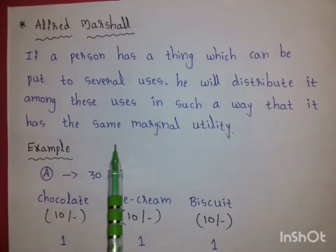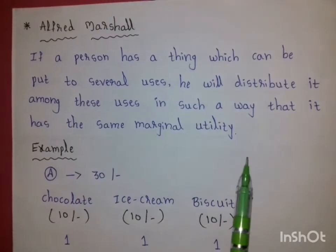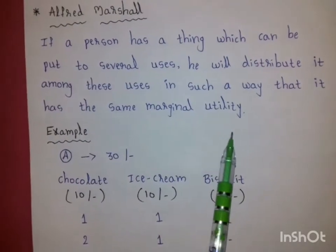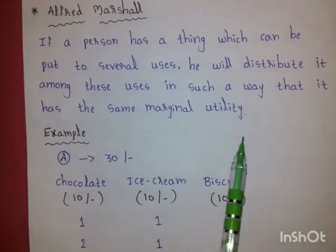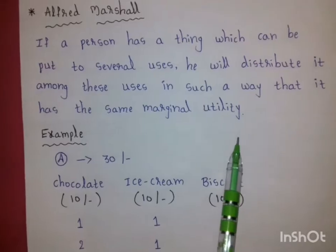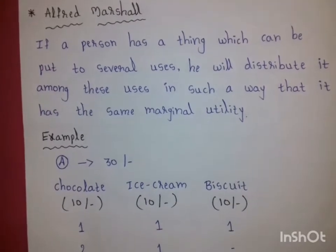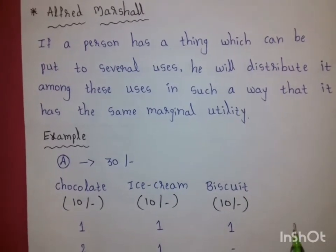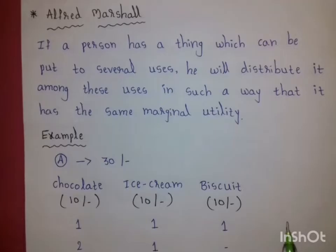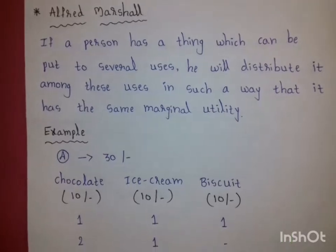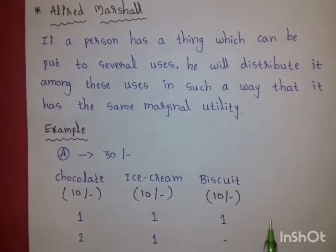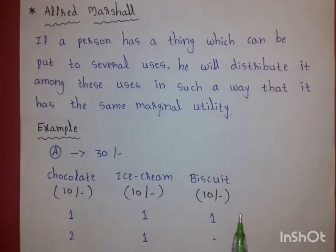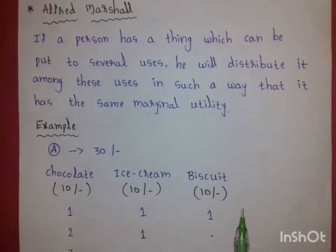Marginal utility means additional utility. That is, the additional satisfaction the consumer gets from each additional rupee spent should be equal across all the goods on which the 30 rupees are spent.